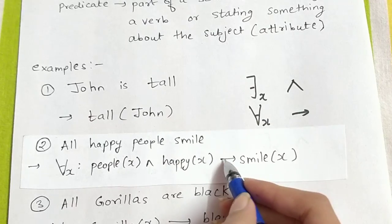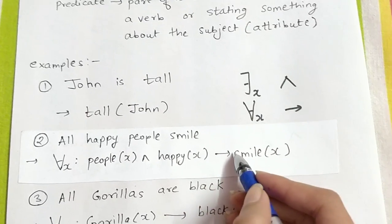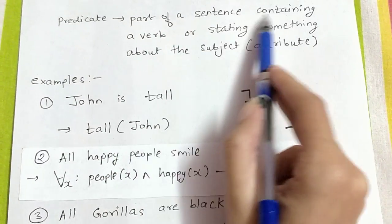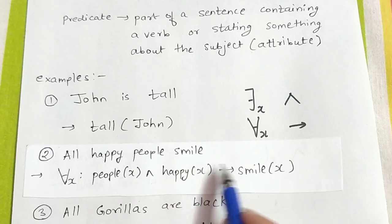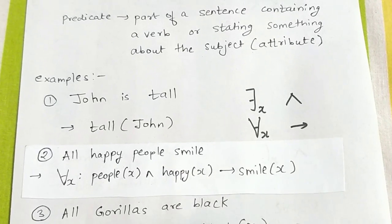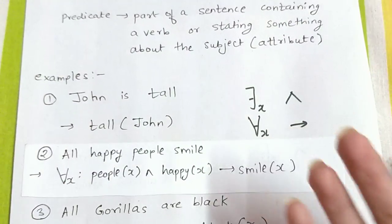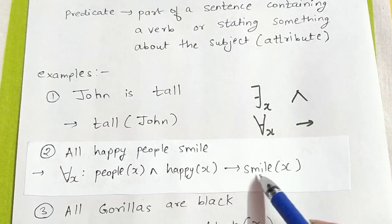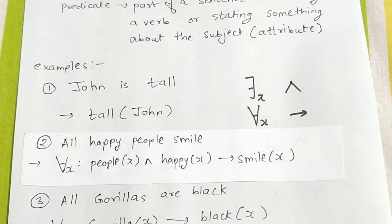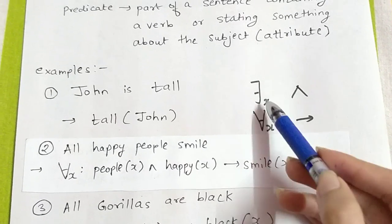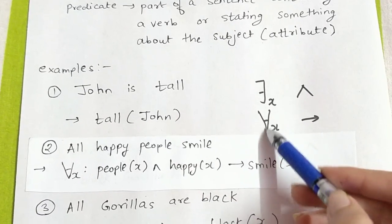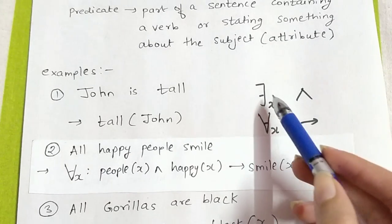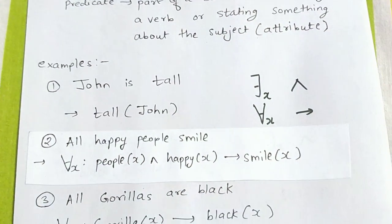All happy people smile, so this implies smile(X). Smile is a predicate. I said that predicate is part of a sentence containing a verb. So the verb here is smile, something that person is doing, or some relation. Hence we write smile(X). We should remember: wherever we have universal quantifier, we use implication. And wherever we have existential quantifier, we use conjunction.